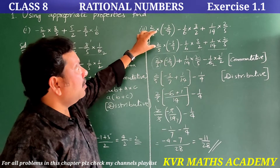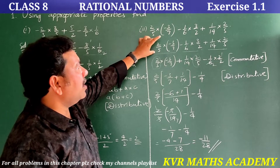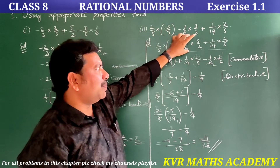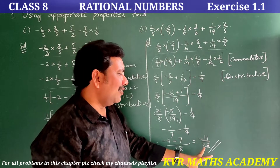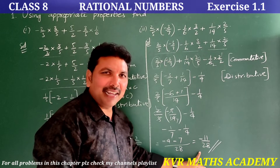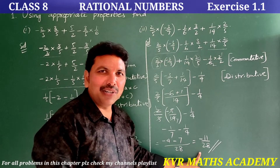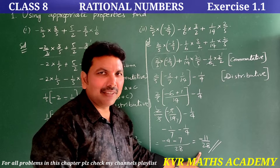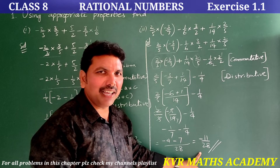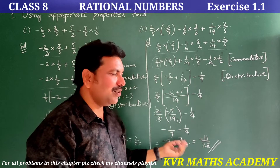Minus 1 by 7 minus 1 by 4. LCM of 7 and 4: these are co-primes, so LCM is 28. 4 into minus 1 is minus 4; 7 into minus 1 is minus 7. So minus 4 minus 7 equals minus 11 by 28. The value of the expression is minus 11 by 28.